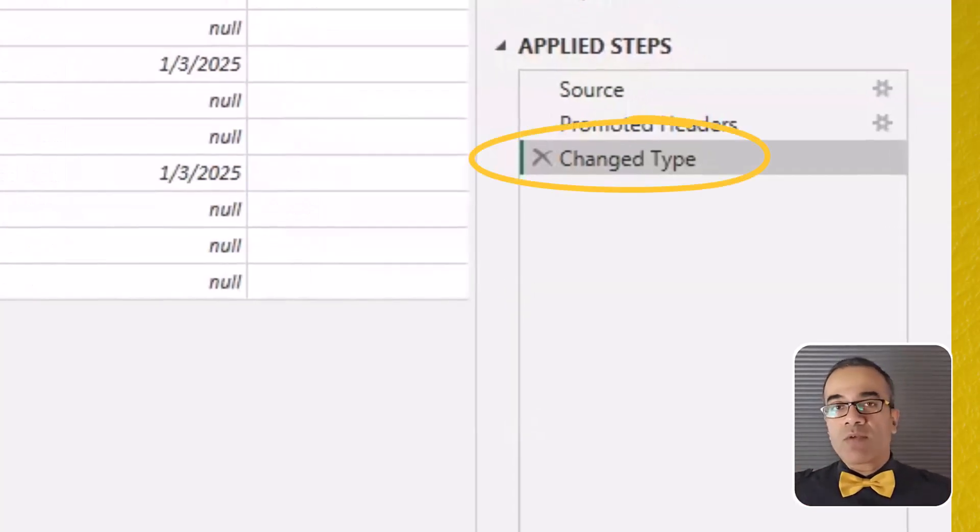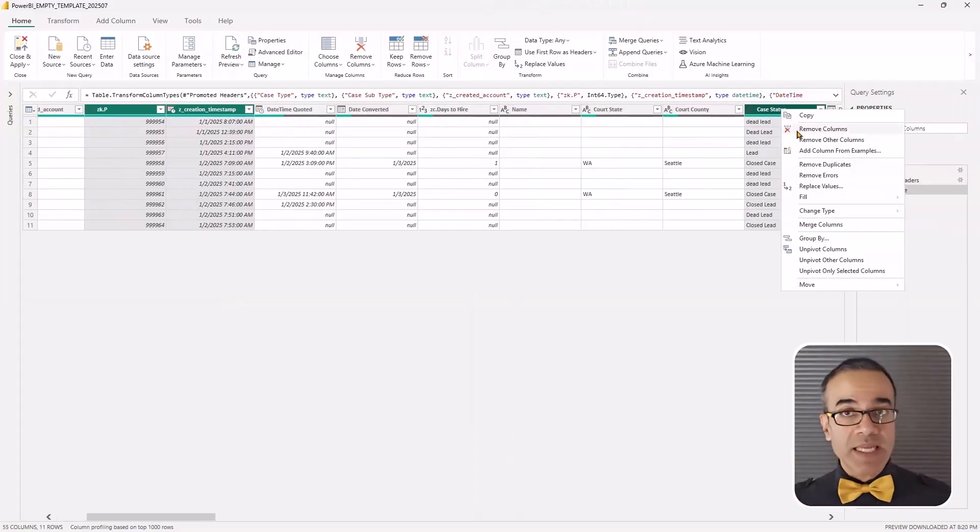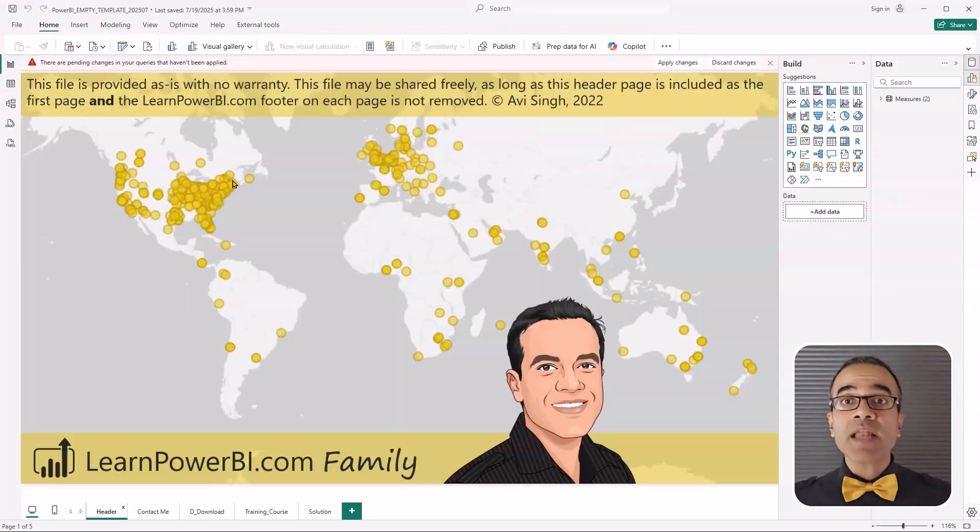And I'm like, okay, fine, whatever. Now I'll only keep the columns I need. I hit close and apply, and everything works.